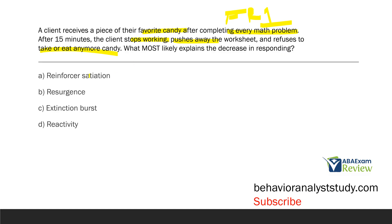Answer A: reinforcer satiation — that's the likely culprit. Answer B: resurgence — resurgence involves extinction, and we're not looking at extinction here. Answer C: extinction burst — same as B, we can rule that out. Answer D: reactivity — reactivity occurs when behavior changes in the presence of an observing stimulus, which is not the case here. Even if reinforcer satiation weren't a perfect fit, it's still the best answer out of all four. What most likely explains the decrease in responding? Answer A: reinforcer satiation.